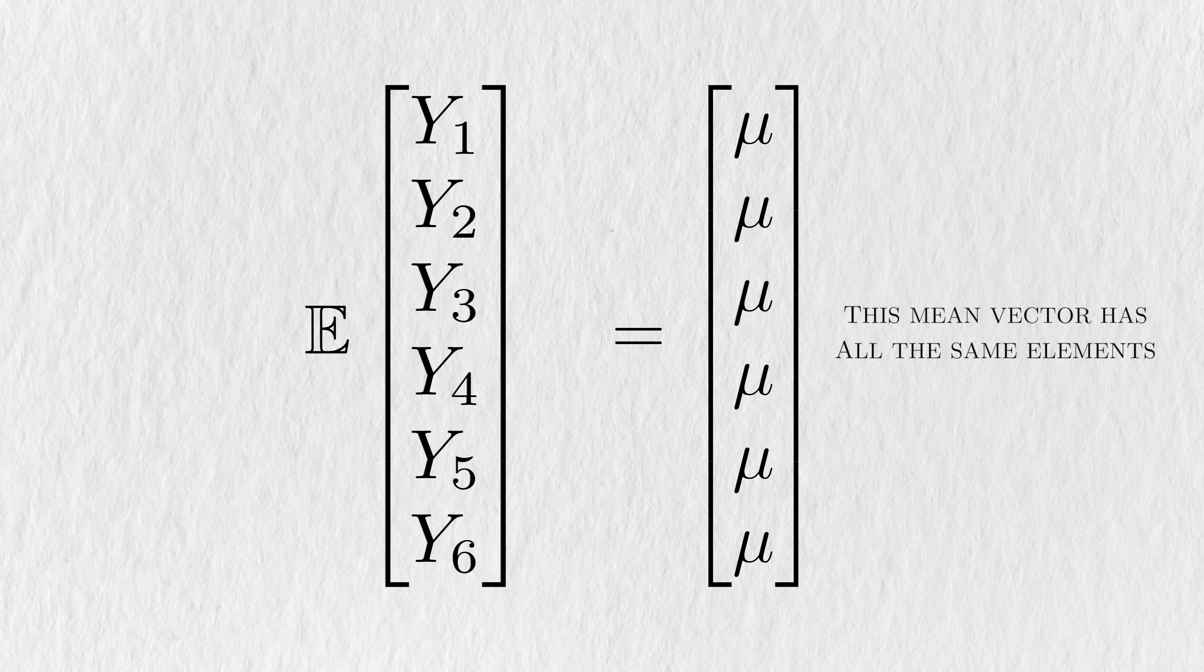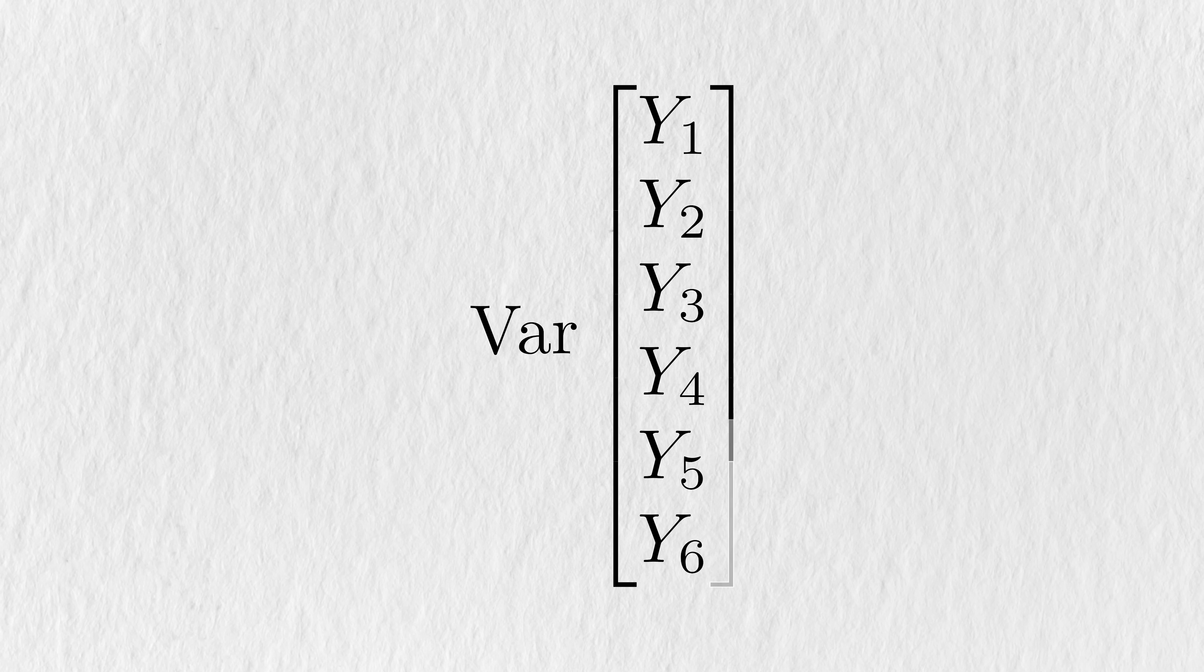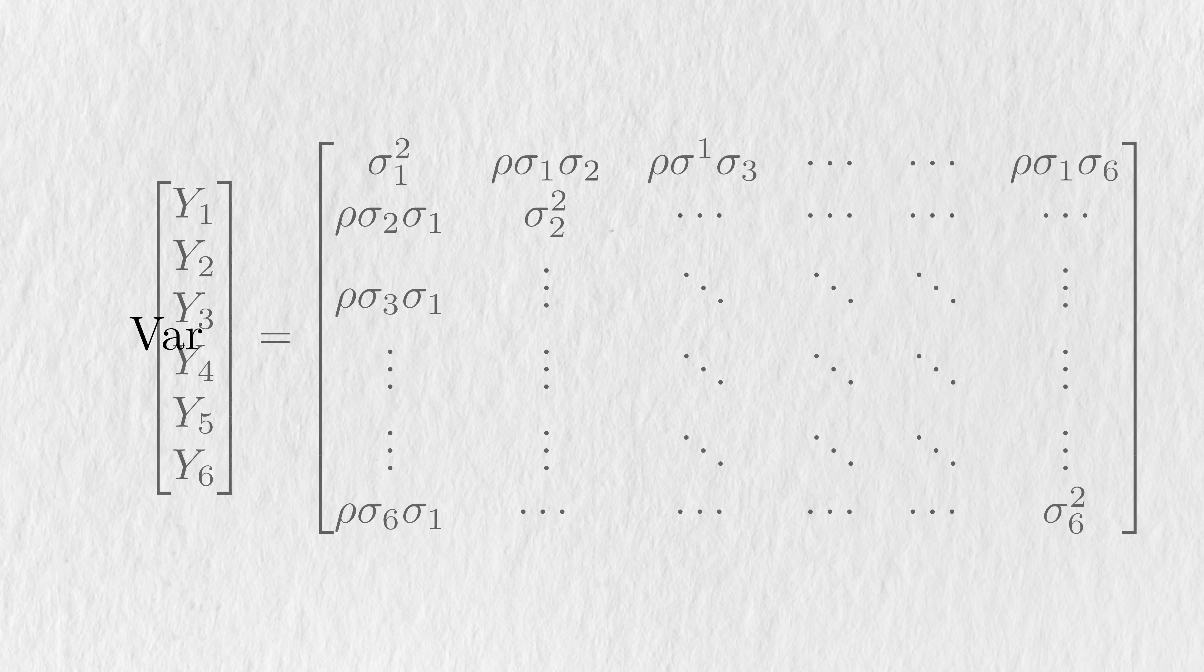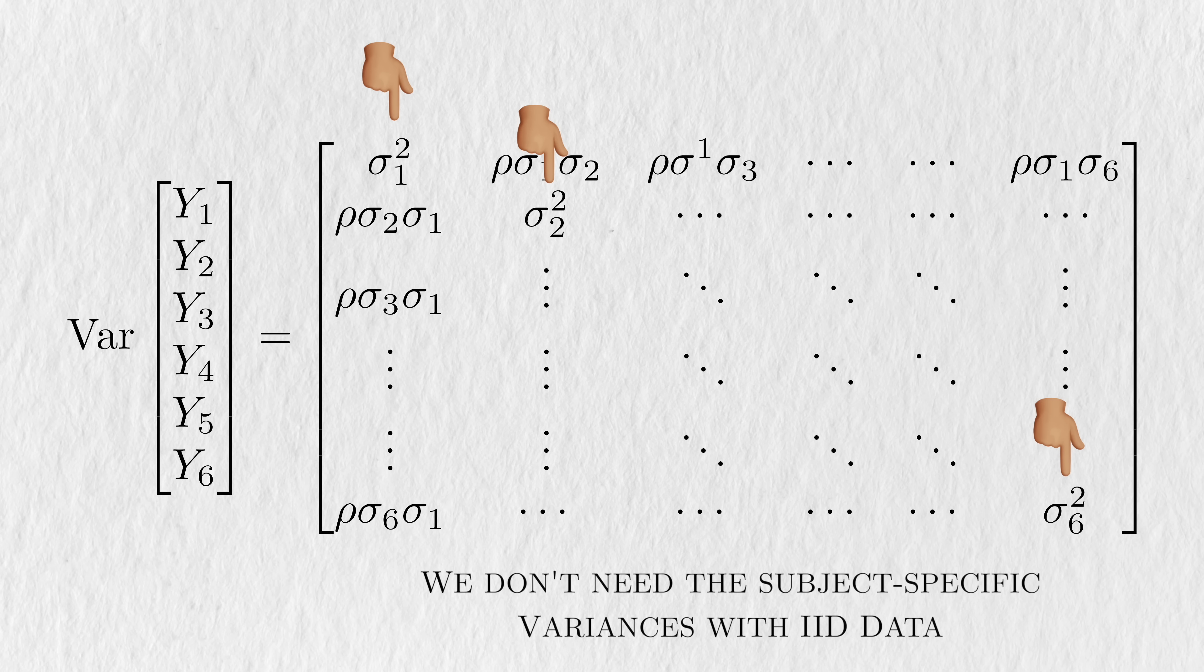When we take the variance of single observations, we get back single values. But things are a little different when we take the variances of vectors of random variables. Instead of a vector of variances, we get a square matrix. Since there are six observations, the dimensions of this matrix are six by six. The elements of this matrix represent different ideas. The variances for each person are on the diagonal. In general, each person might have their own variance, indicated by these person-specific subscripts. But since the data are IID, everyone has the same variance. So we don't need the subscripts.